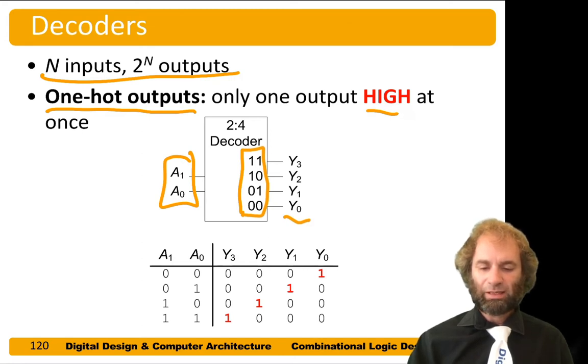So if a is 0, 0, then we want to assert output 0. If a is 0, 1, we want output 1. If a is 1, 0, we want output 2. And if a is 1, 1, we want output 3. So we're just choosing one of those four outputs based on the two bits of address.